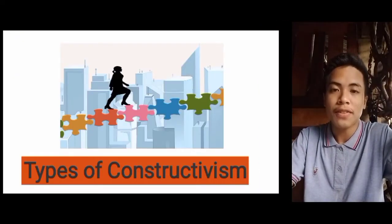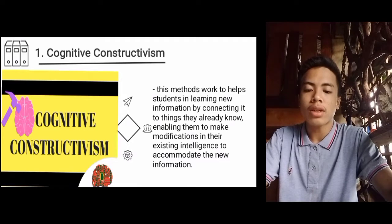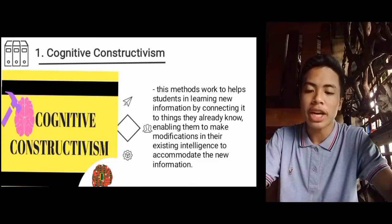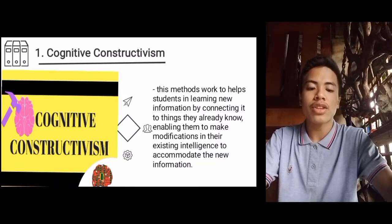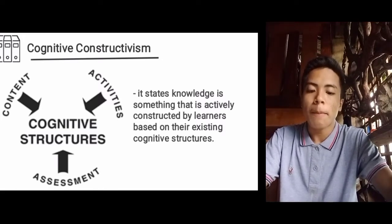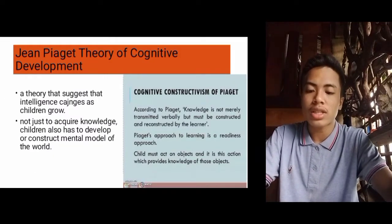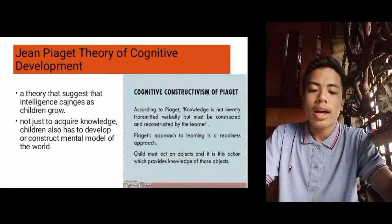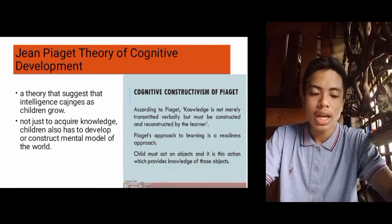Here are the types of constructivism. First, we have cognitive constructivism. This method works to help students learn new information by connecting to things they already know, enabling them to make modifications in their existing understanding to accommodate new information. It states that knowledge is actively constructed by learners based on their existing cognitive structures. According to Jean Piaget's theory, his constructivist theory suggests that intelligence changes as children grow — it's not just about acquiring knowledge. The child has to develop or construct a mental model of the world.